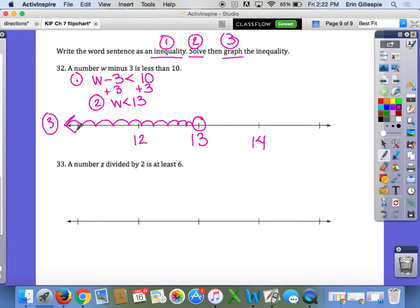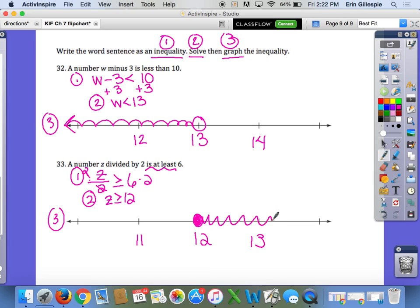Problem 33: A number Z divided by 2 is at least 6. So Z divided by 2. This one's tricky. If it's at least 6, that means the smallest it can be is 6, so it's actually greater than or equal to 6. That's your inequality. To solve, multiply both sides by 2. That gives you Z is greater than or equal to 12. That's your solution. And then your graph: we'll have 12, 13, 11. We want a closed dot on 12 because it has the line underneath. And we want Z to be greater than 12, so shade right. That is your video. Make sure you check your work before you turn it in.